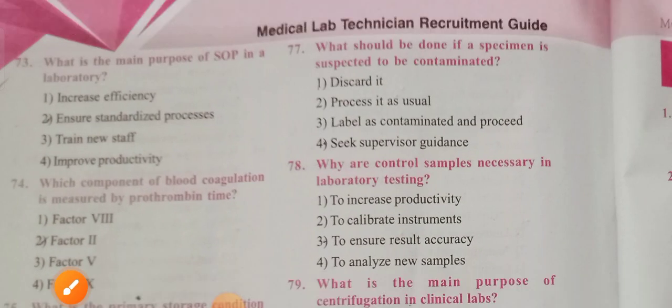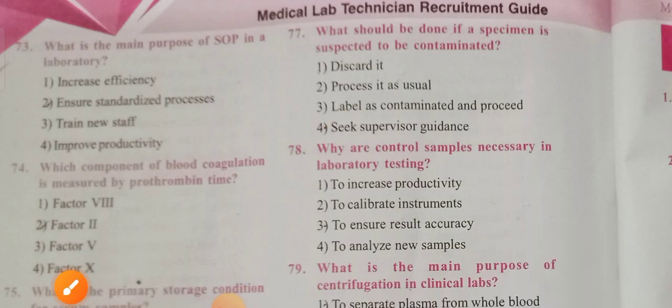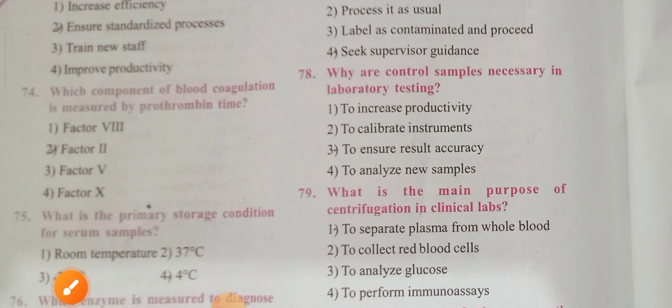Question 77: What should be done if a specimen is perceived to be contaminated? Options: process as usual, label it as contaminated, seek supervisor guidance. Option 4 is the correct answer — seek supervisor guidance.